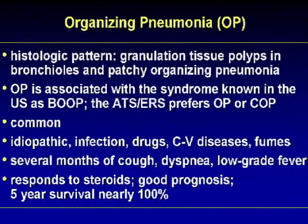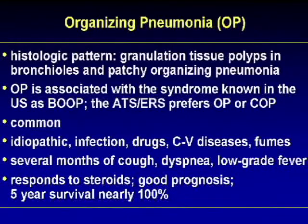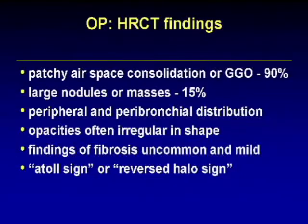The histology of organizing pneumonia is associated with the syndrome known in the US as BOOP; the ATS and ERS prefer organizing pneumonia or COP as designations. Common disease with idiopathic, infectious, drug, collagen disease, and fume causes. Typical history is several months of cough, dyspnea, and low-grade fever; responds well to steroids; five-year survival is nearly 100%. On high-resolution CT we see patchy airspace consolidation or ground glass, large nodules in 15%, peripheral and peribronchial distribution, and another finding called the atoll sign or reversed halo sign that is very characteristic of this disease.